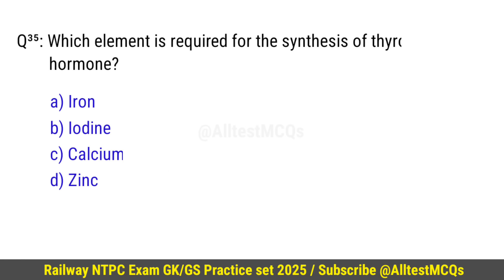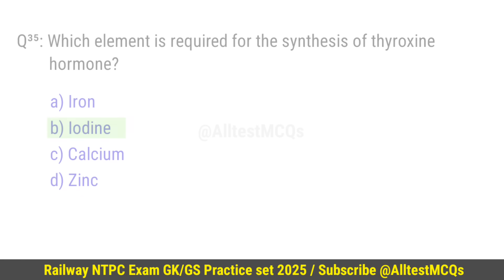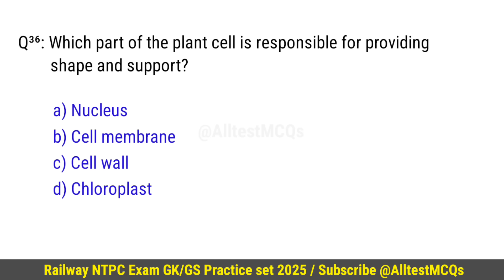Question number 35: Which element is required for the synthesis of thyroxine hormone? Correct option is B — Iodine. Question number 36: Which part of the plant cell is responsible for providing shape and support? Right option is C — Cell wall.